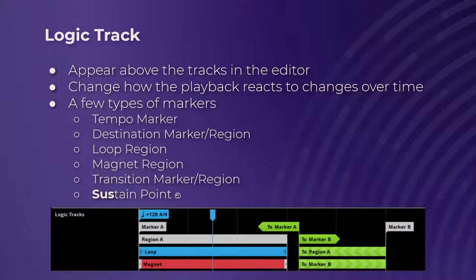Starting off, there's the tempo marker. You're going to want to use this for music — it is essential. This will set the tempo and time signature for everything to the right of it until the next tempo marker, where you can change it if you want. By default it is set to 120 BPM and 4/4. If you want anything other than 120 BPM and 4/4, add a tempo marker and change it.